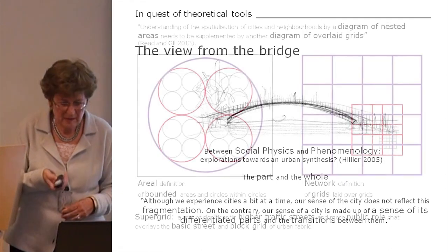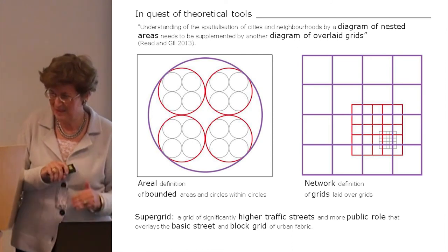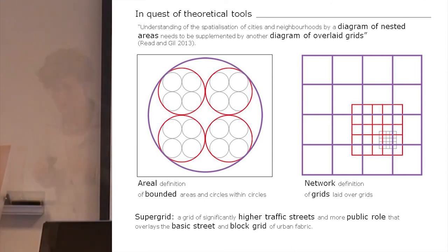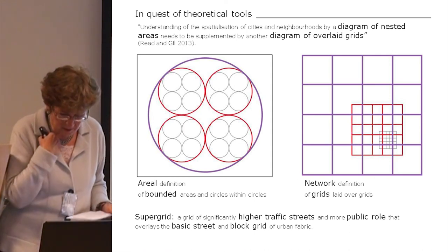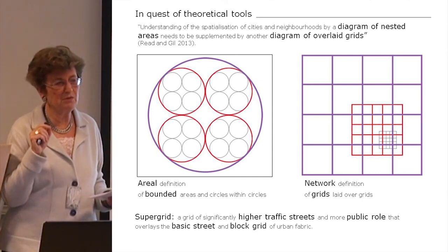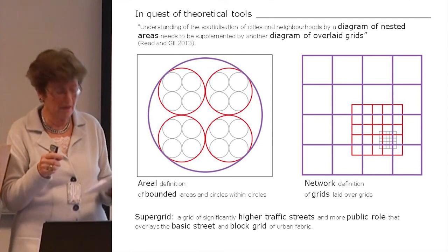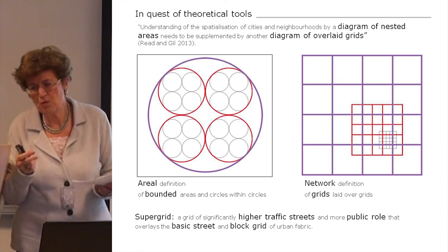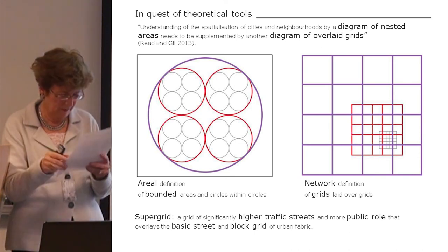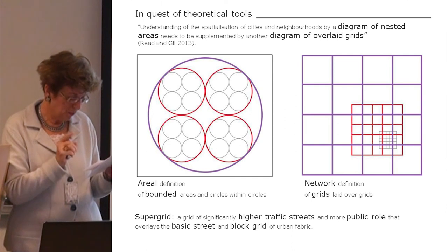Looking around for help, I came upon an article by Reid and Gill — from the analytical side of the bridge — which I found very interesting. They talk about two different ways of understanding the specialization of cities and neighborhoods. One is a diagram of nested areas that needs to be supplemented by a diagram of overlaid grids. The first, the aerial definition, is a familiar way of mapping differentiated parts grouped according to relevance, with transitions to be sought at the boundaries of these circles.